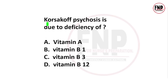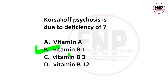Next question: Korsakoff's psychosis is due to deficiency of which vitamin? Options: Vitamin A, Vitamin B1, Vitamin B3, Vitamin B12. The right answer is option B, Vitamin B1. Vitamin B1 ko hum thiamine ke naam se bhi jaante hain. Iski kami se Wernicke's encephalopathy aur Korsakoff's psychosis jaisi conditions ho sakti hain.